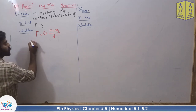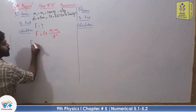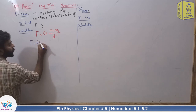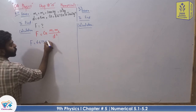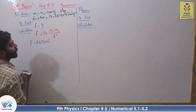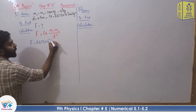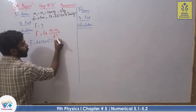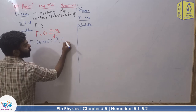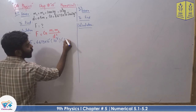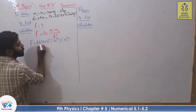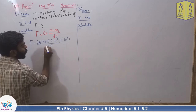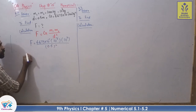Given values, we have to put them in. Force F is equal to gravitational constant 6.673 multiplied by 10 raised to the power of minus 11. Mass M1 value is 10 raised to the power of 3. Multiply by mass M2, which is also 10 raised to the power of 3. Divided by distance 0.5, which is squared.